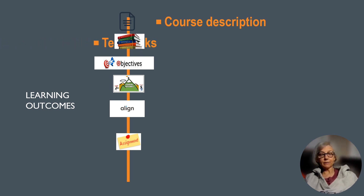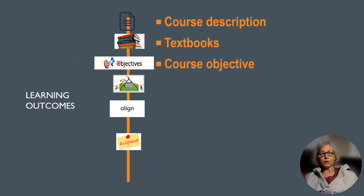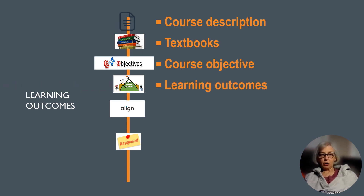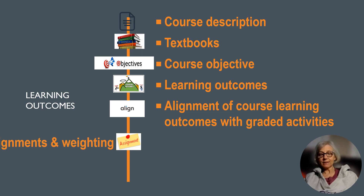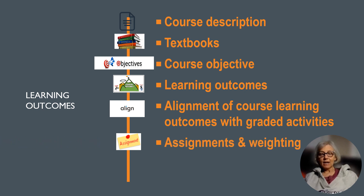The learning outcomes for the course overview include: review the course syllabus, list the textbooks required, outline the course objective, identify the learning outcomes, explore the alignment of course learning outcomes with graded activities, and review assignments and weightings.